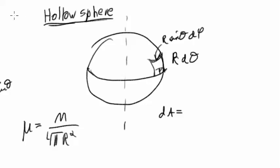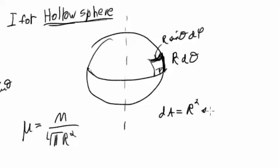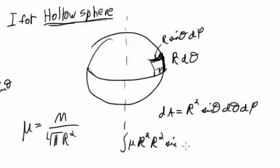Finally, we're going to do the moment of inertia for a hollow sphere. Instead of a volume density, I'm going to work with an area density: mass divided by the area of the sphere, which is 4 pi R squared. The differential area element is composed of R sine theta d-phi on one side and R d-theta on the other, so it's R squared sine theta d-theta d-phi.